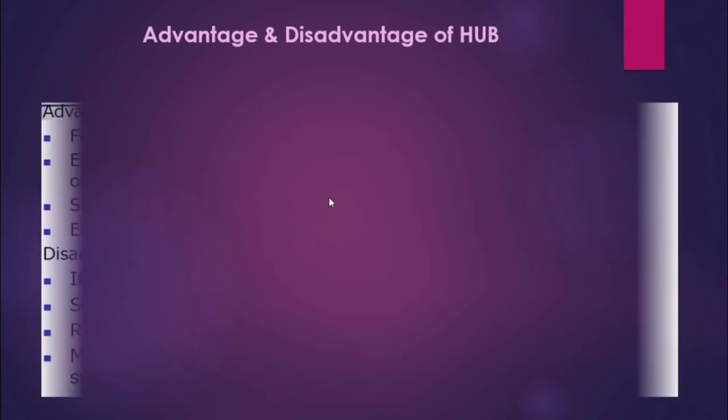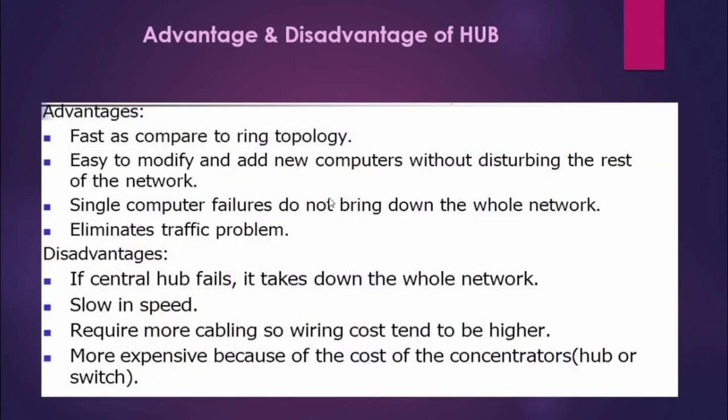Advantages of a hub: it is fast compared to ring topology, easy to modify and add new computers without disturbing the rest of the network, single computer failures do not bring down the whole network, and it eliminates traffic problems. Disadvantages: if the central hub fails, it takes down the whole network, it is slow in speed, and requires more cabling so wiring costs tend to be higher.